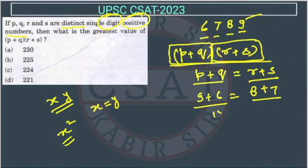So (P + Q)(R + S) maximum value will be 15 square means 225, so the answer is option B.